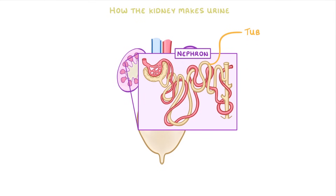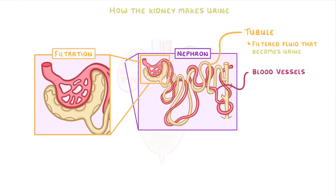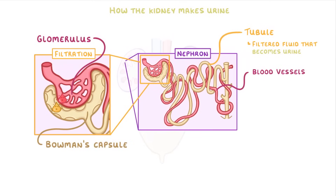The yellow part is the tubule, and carries the filtered fluid that's going to become urine. Meanwhile, the red parts are the blood vessels. The process starts up here, with filtration, which is where some of the liquid part of the blood is forced from the glomerulus — which is this tangle of blood vessels — into the Bowman's capsule, which is the start of the tubule.